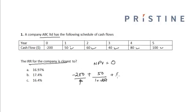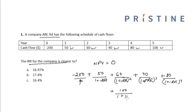So in this case it will give me 50 divided by (1 plus IRR) plus 60 divided by (1 plus IRR) whole square plus 40 divided by (1 plus IRR) raised to the power of 3 plus 80 divided by (1 plus IRR) raised to the power of 4 plus 100 divided by (1 plus IRR) raised to the power of 5 equals 0.